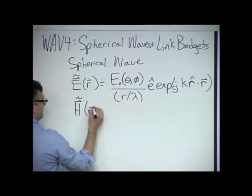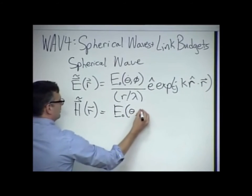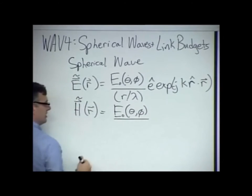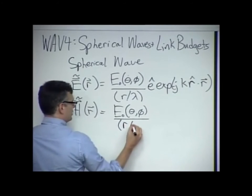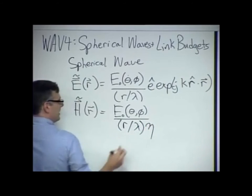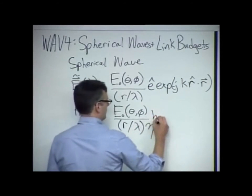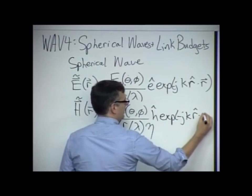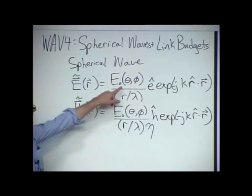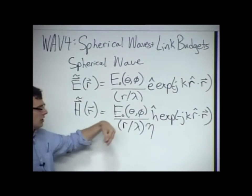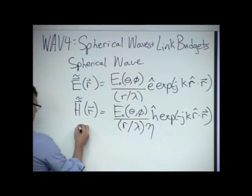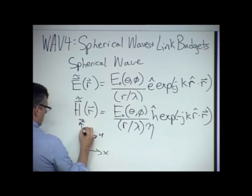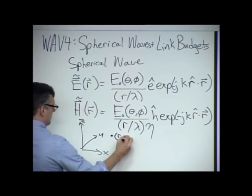H is exactly the same thing — E naught allowed to vary with respect to theta and phi without violating Maxwell's equations. It has the same geometrical spreading factor, an impedance eta in the denominator, H hat has a polarization, and the exact same phase propagating term. I'm using the spherical coordinate system, where a point of observation is described by R, theta, and phi.